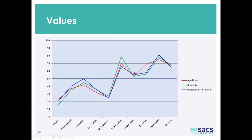Benevolence is all about helping people, and not surprisingly, it's just a little above population average. Tradition is really interesting — people in the sector are quite traditional, meaning they tend to have strong beliefs that come from their family, from society, or even from religion.